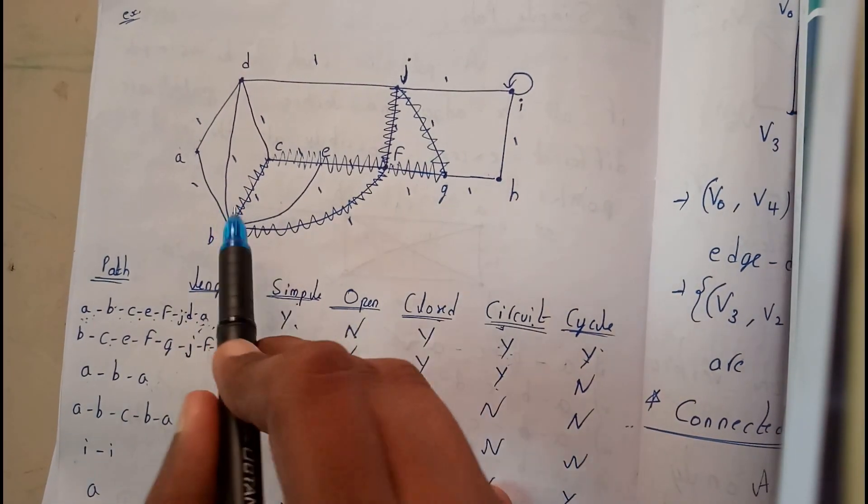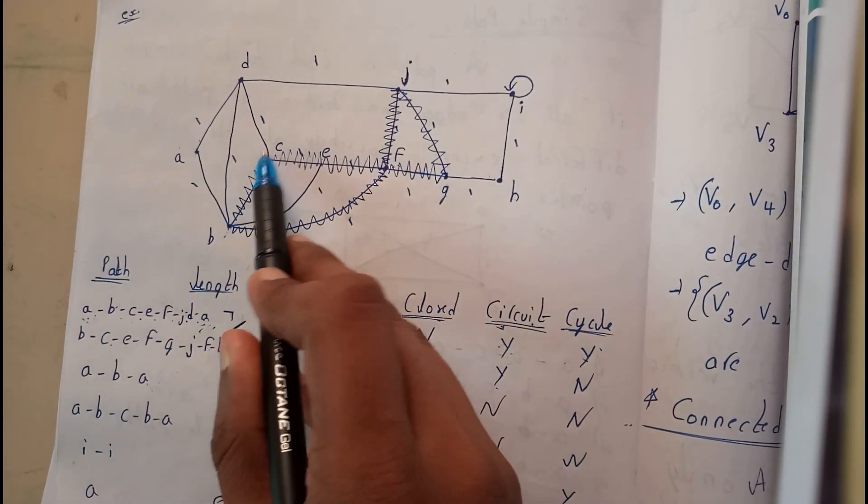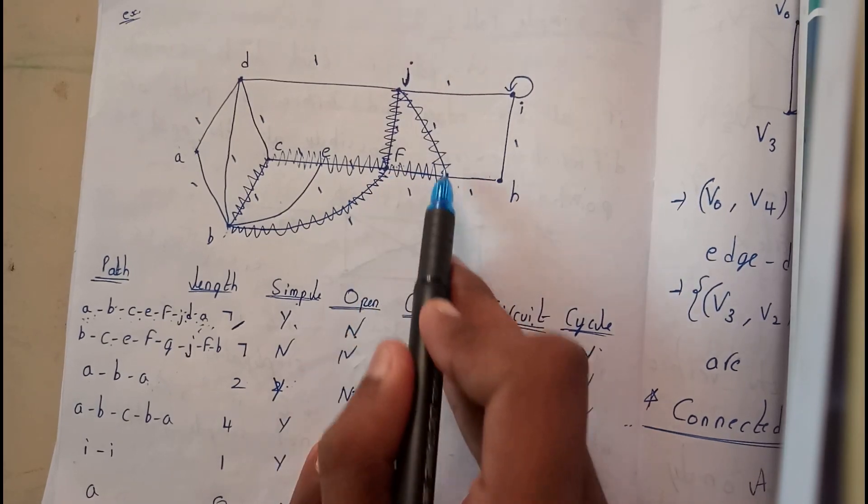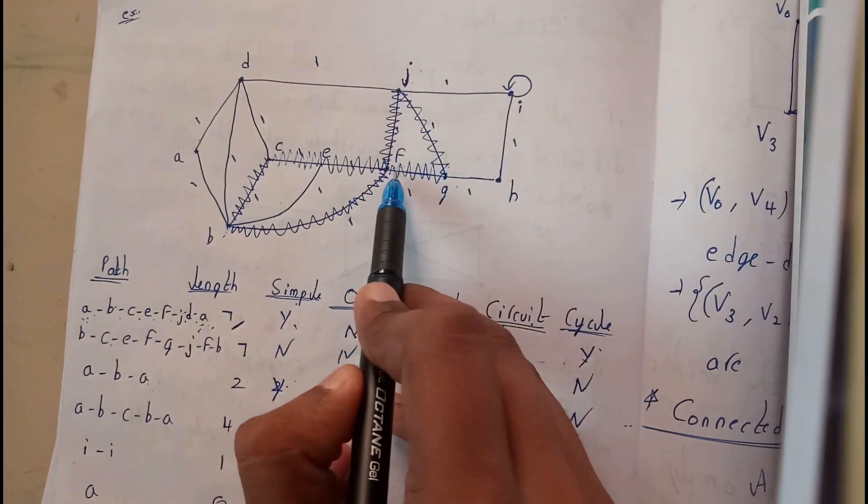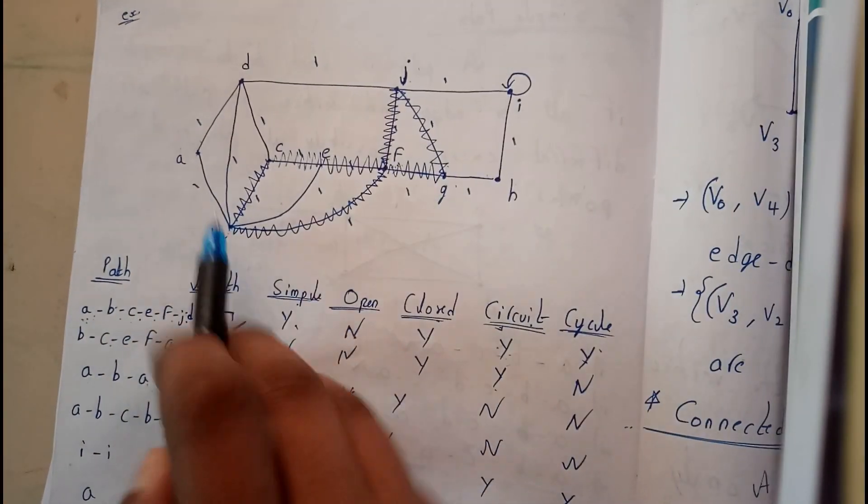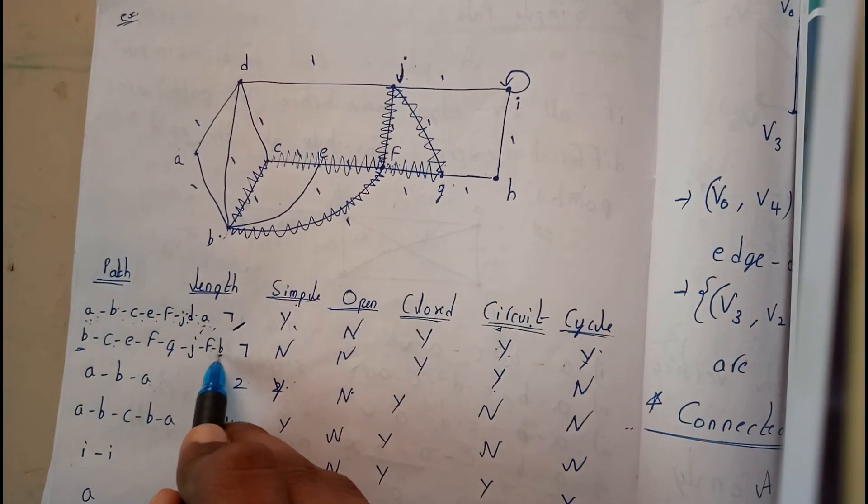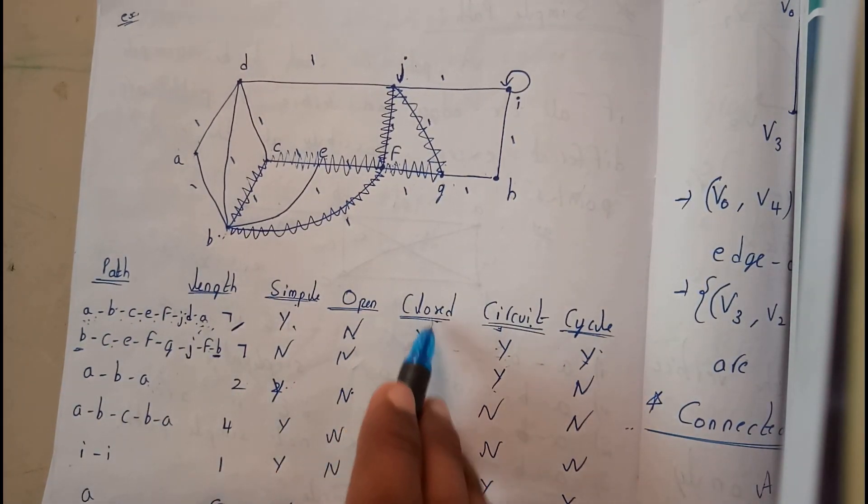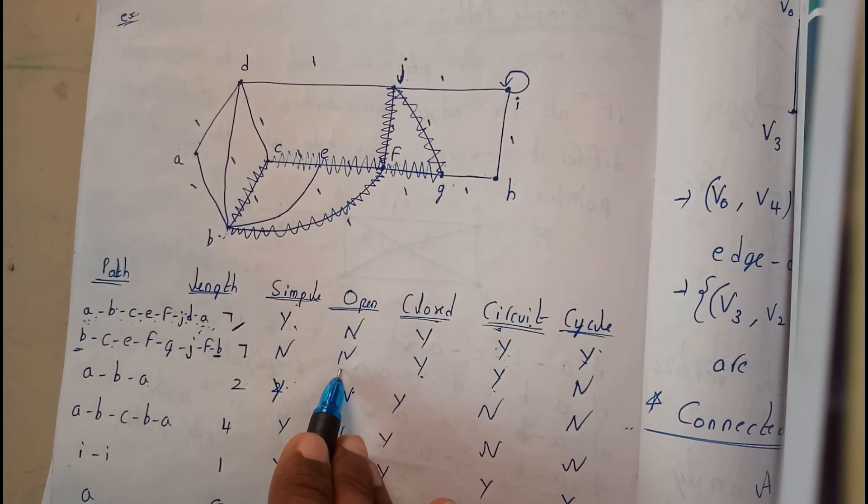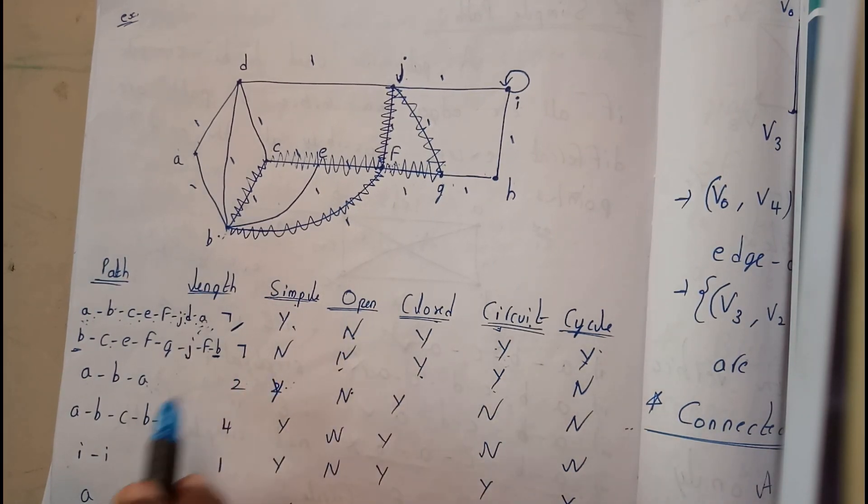We have travelled B to C, C to E, E to F, F to G, G to J, J to F, and F to B. So the initial and final positions are same, hence it is closed. And we will write no for open.